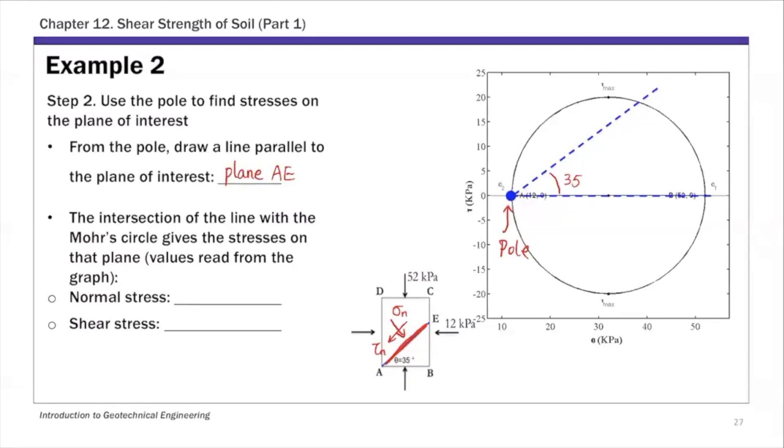From the pole, draw a line at 35 degrees from horizontal, parallel to plane AE. This line intersects with the Mohr circle, and that intersection gives the stresses on plane AE.